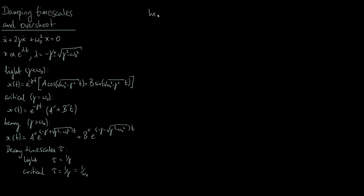For the heavy damping case there are two decaying exponentials, giving two timescales tau-plus and tau-minus. Defined the same way — the time for each exponential to decay to one over e — the two decay timescales are one over gamma plus or minus the square root of gamma-squared minus omega-naught-squared.